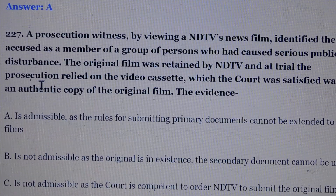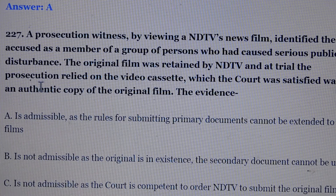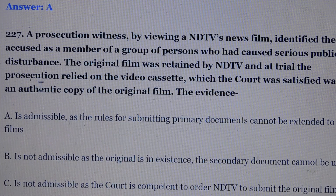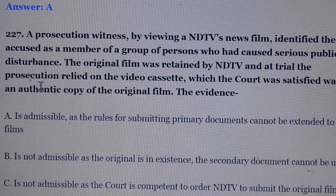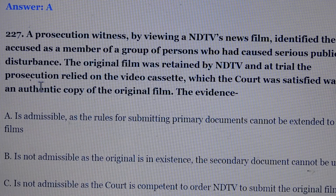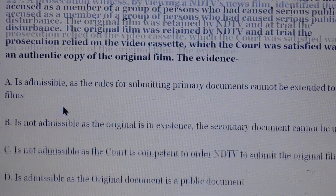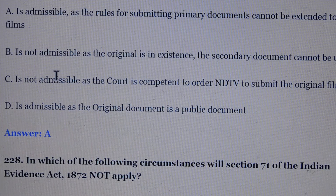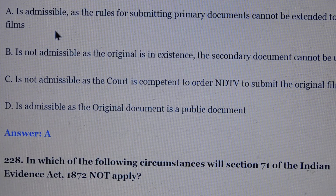Question number 227: A prosecution witness, a NDTV news film, identified the accused as a member of a group of persons who had caused serious public disturbance. The original film was held by NDTV, and at trial the prosecution relied on a video cassette which the court was satisfied was an authentic copy of the original film. Answer is option number B — the evidence is admissible as the rules for submitting primary documents cannot be extended to films.